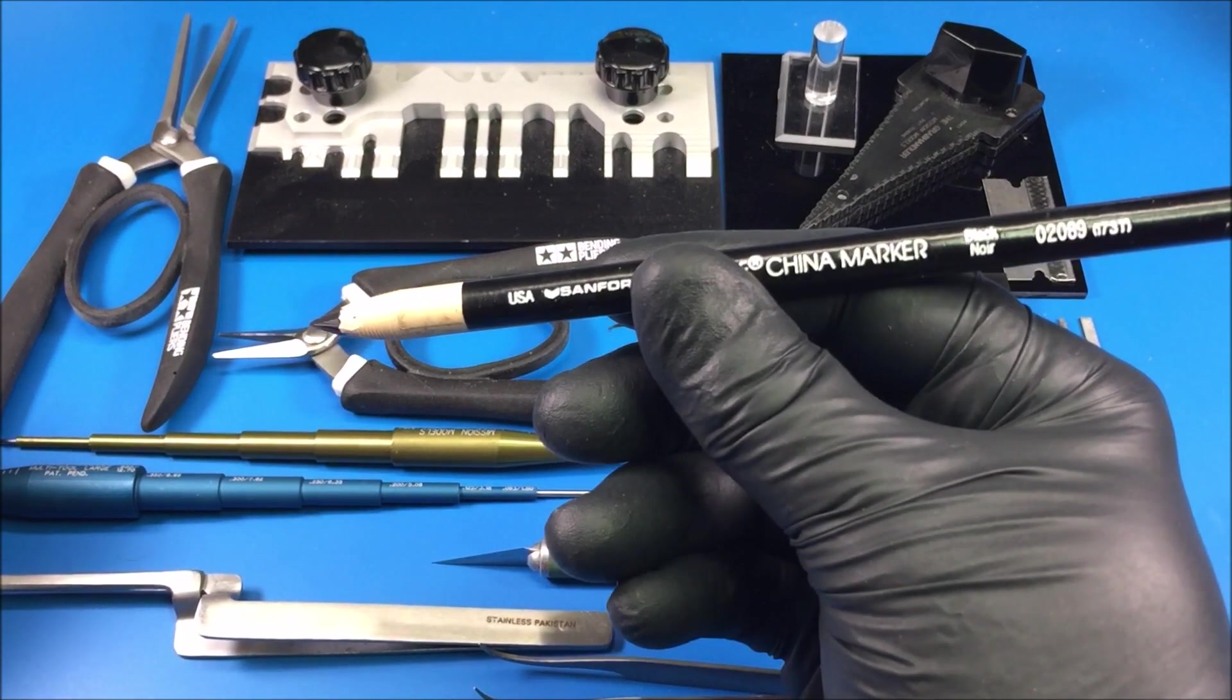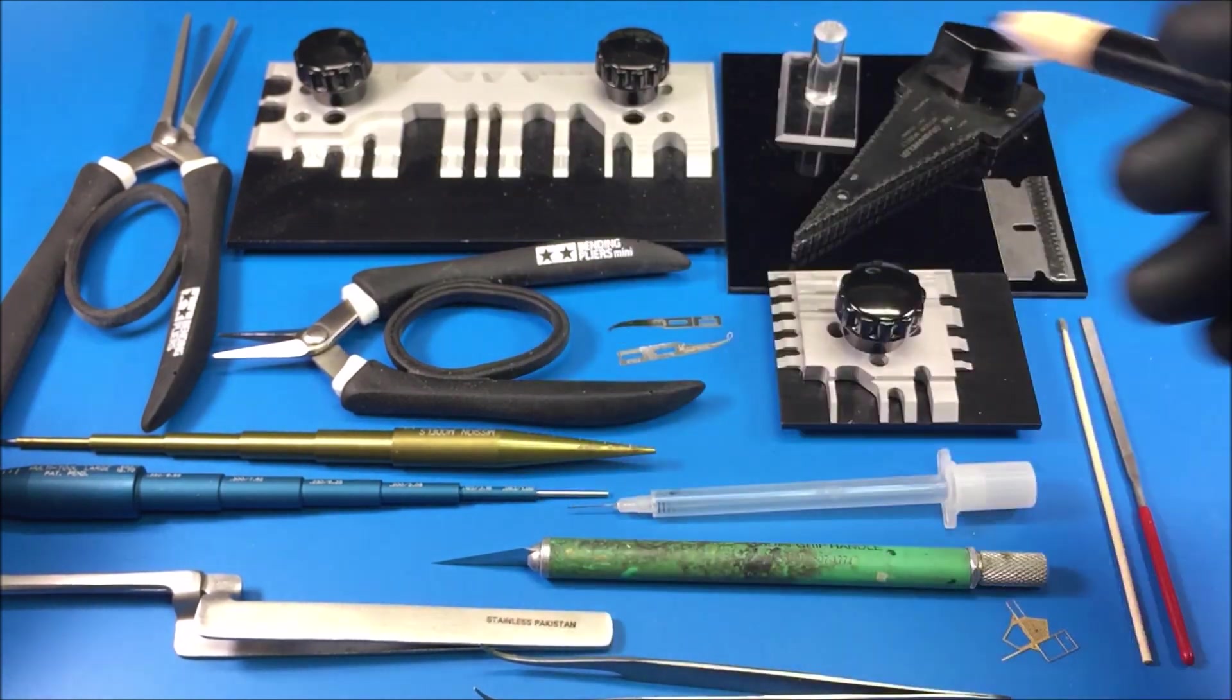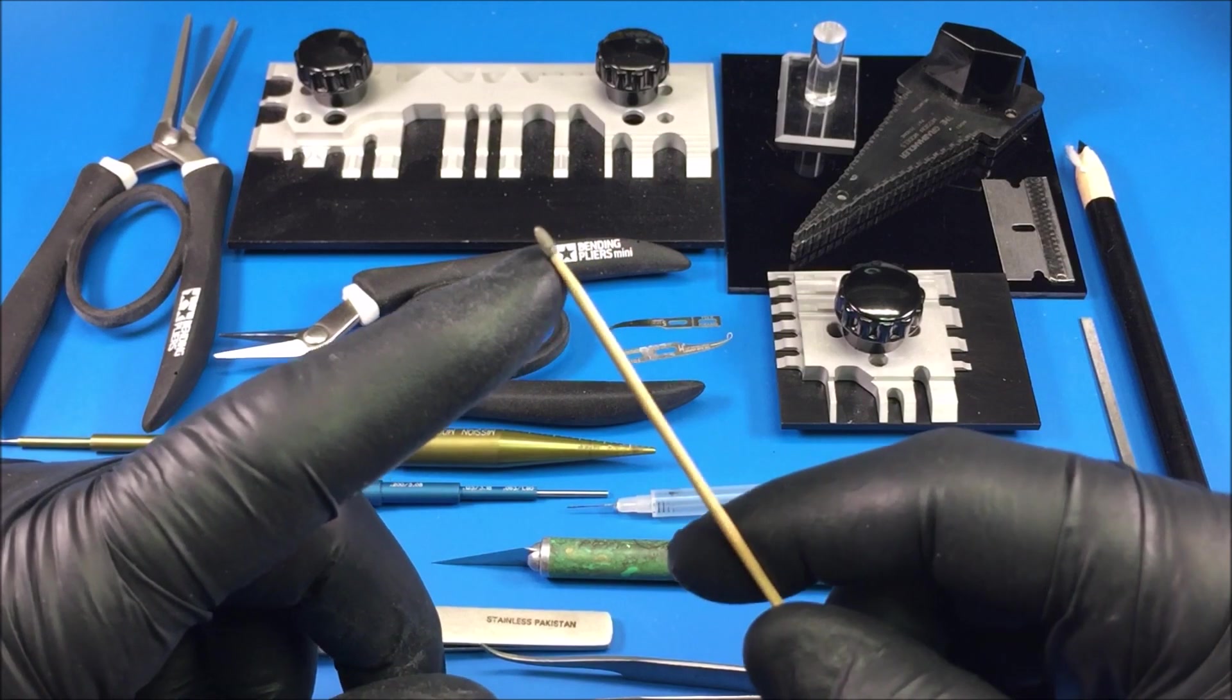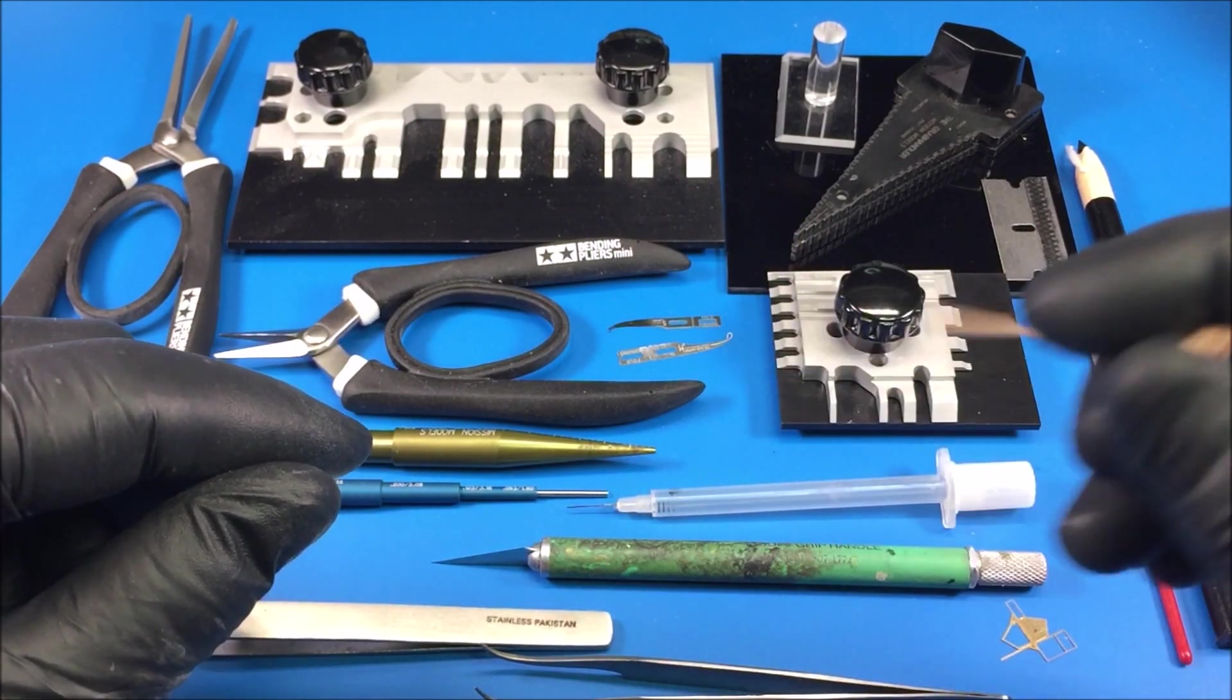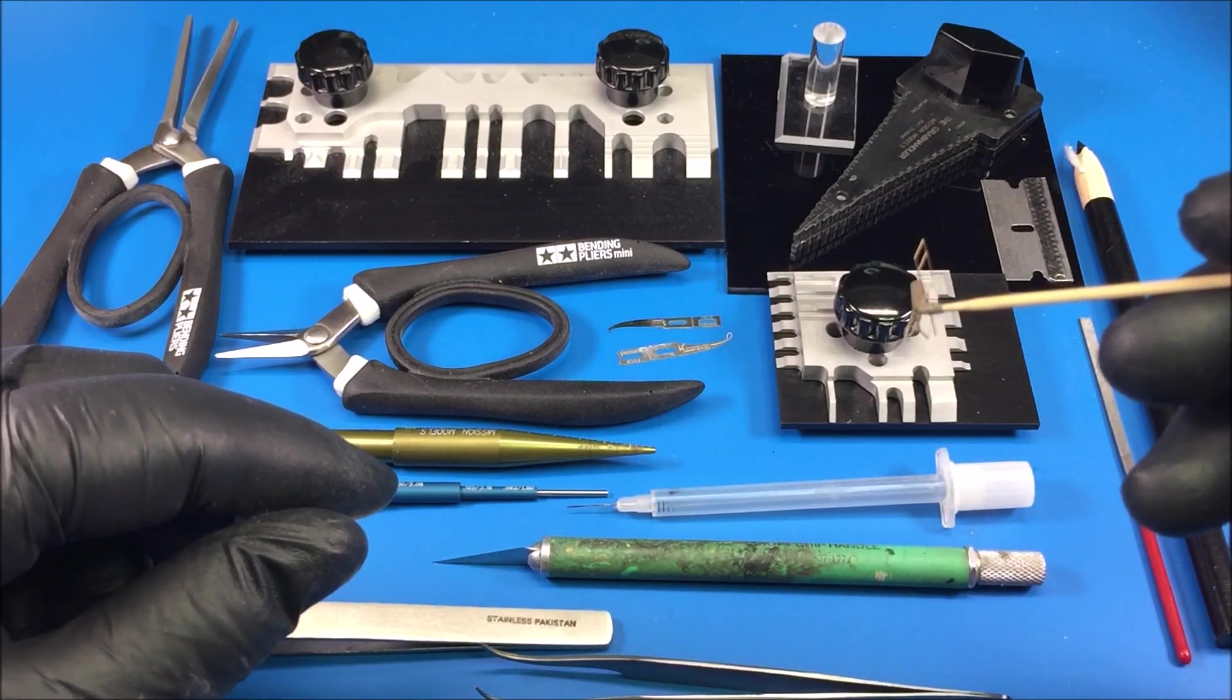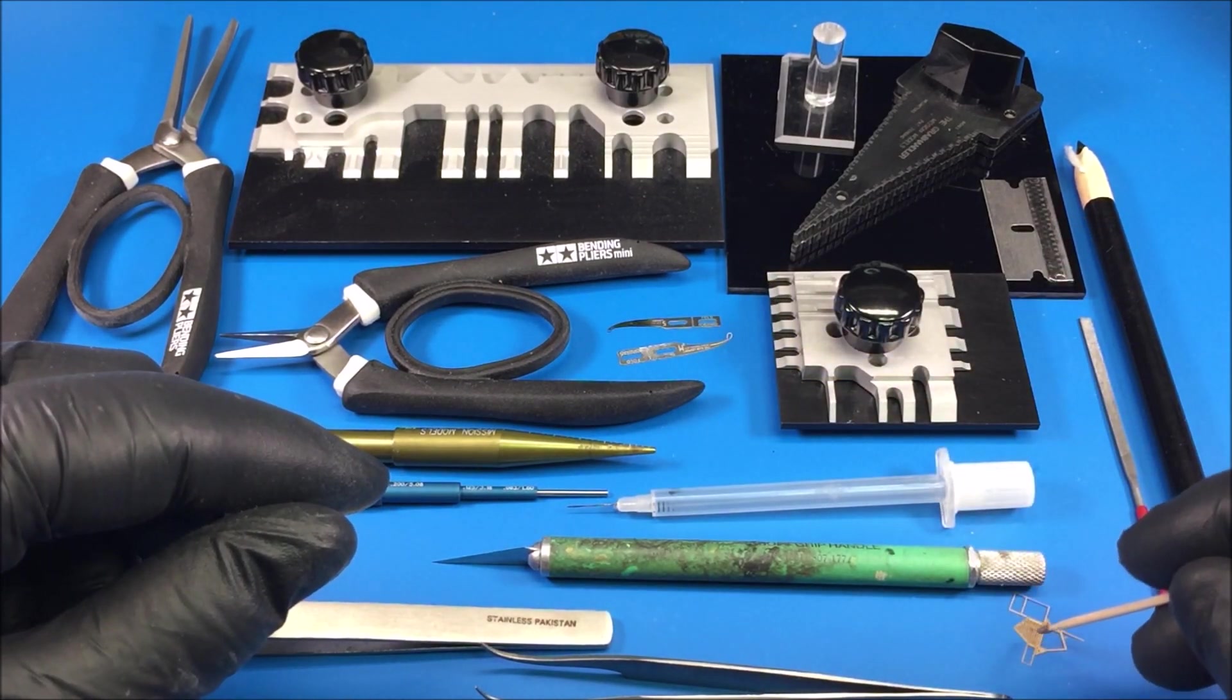I think Staples carries these, I'm not sure how much they are. That's a handy tool to have as well. This is dental wax - I just break off a little chunk and stick it to a toothpick like this, and that too can be used as a pickup tool for photo etch.